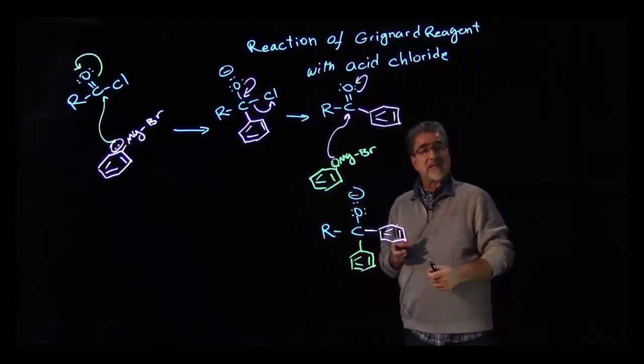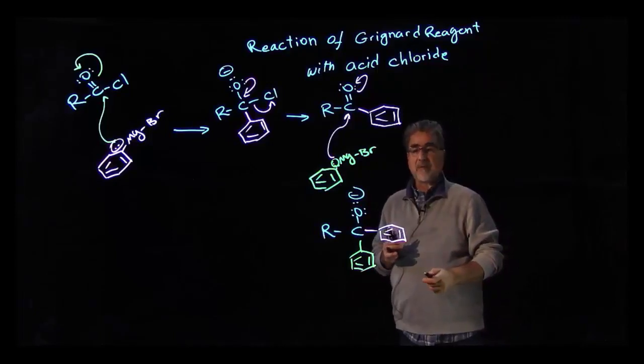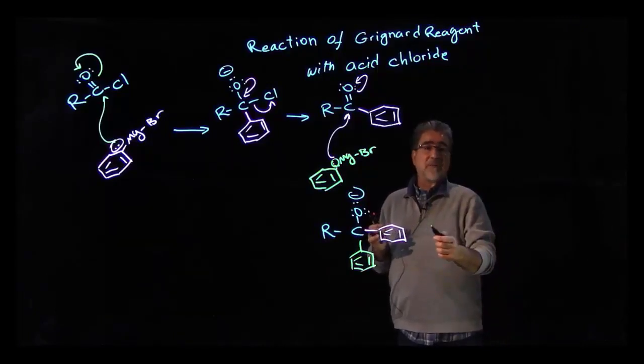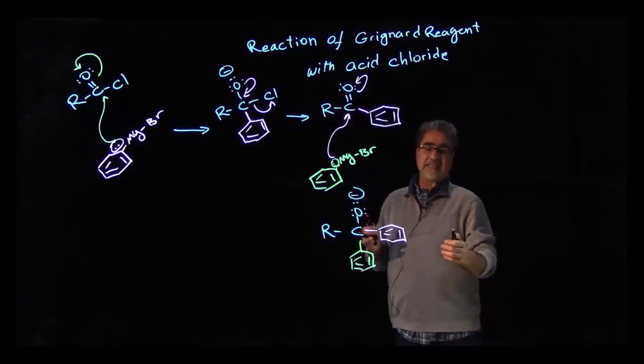So this is the intermediate of the second mole of the Grignard reacting with the carbonyl. Again, electron is coming back. If there is a leaving group, it would leave. If not, it stays as is.